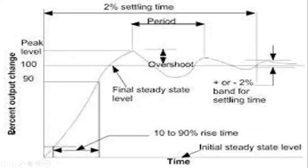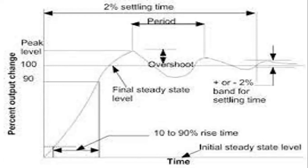Let's understand this with a diagram. The y-axis shows percentage output change and the x-axis shows time. If you give a step input of 100 degrees centigrade — meaning 100% output change — you expect the output to settle there. A step input is like inserting a thermometer instantaneously into a bucket of hot water already at 100°C.